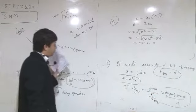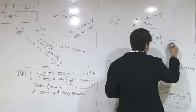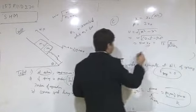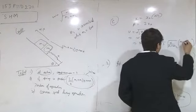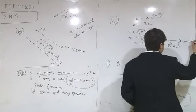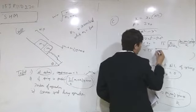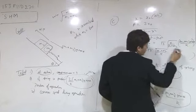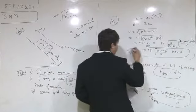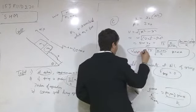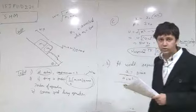Substituting ω = √(k/(m1 + m2)) and x0 = (m1 + m2)g sinθ / k, solving gives the velocity at the separation point as √3 · (m1 + m2)g sinθ / √(k(m1 + m2)), which simplifies to √(3(m1 + m2)g sinθ / k). This is the common speed when the blocks separate.